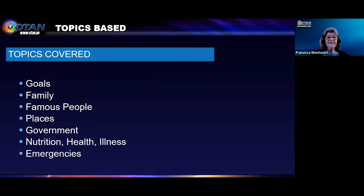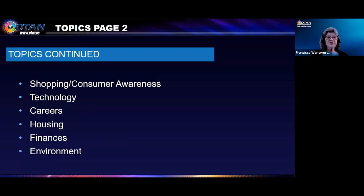The topics covered include goals and personal information, family and family relationships, famous people, places, government, nutrition, health, illness, emergencies, shopping, consumer awareness, technology, careers, housing, finances, and environment — those are the 18 topics.